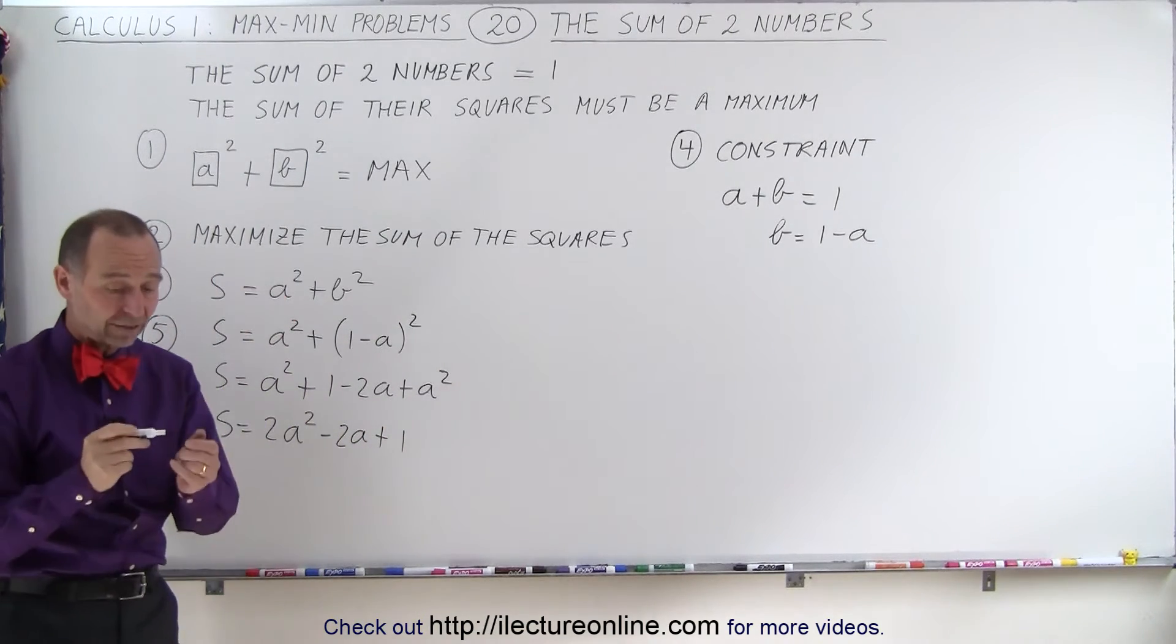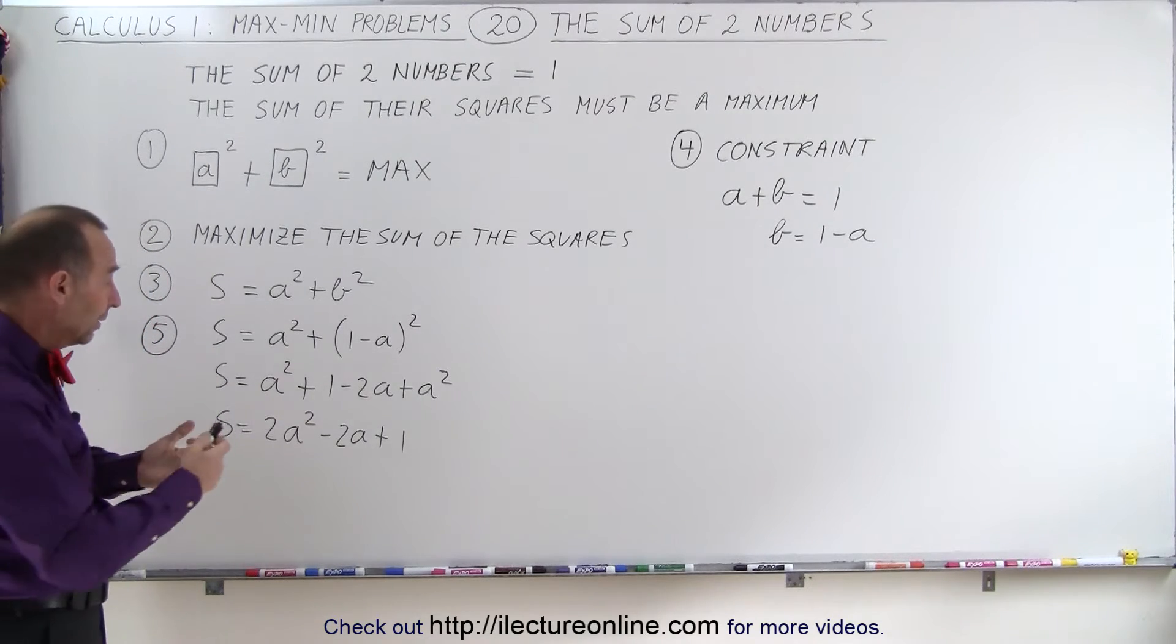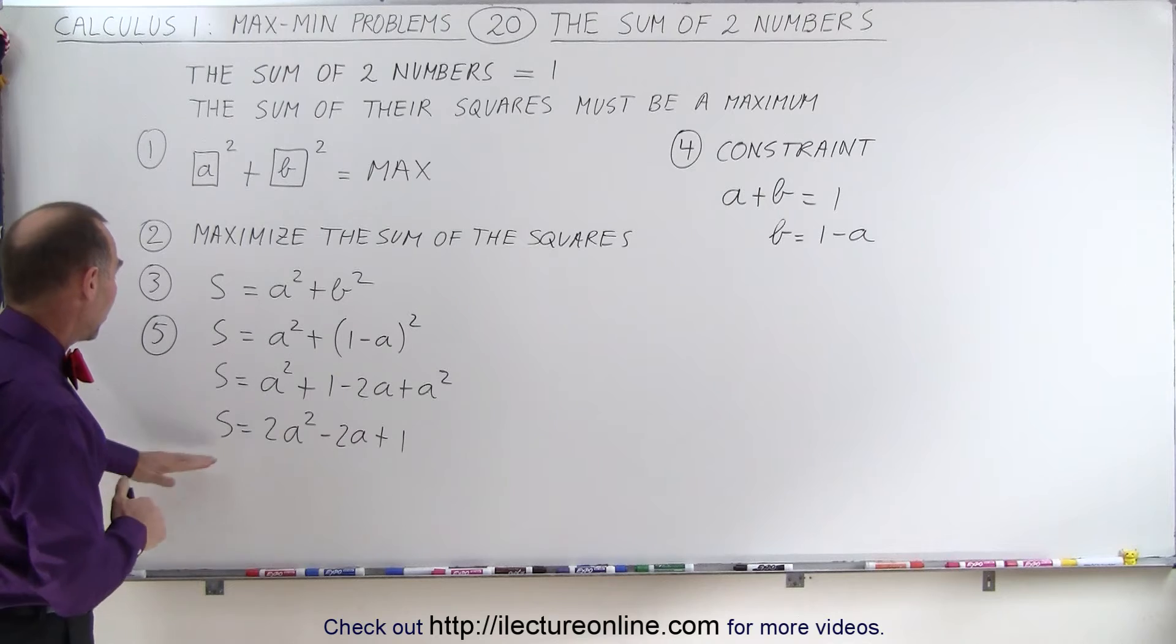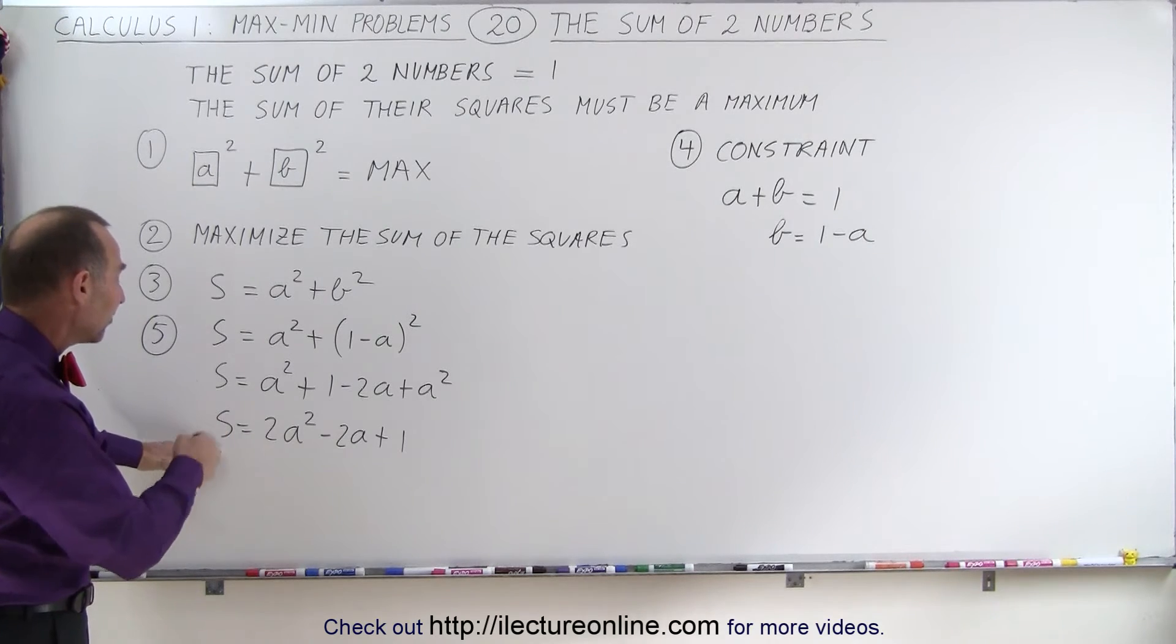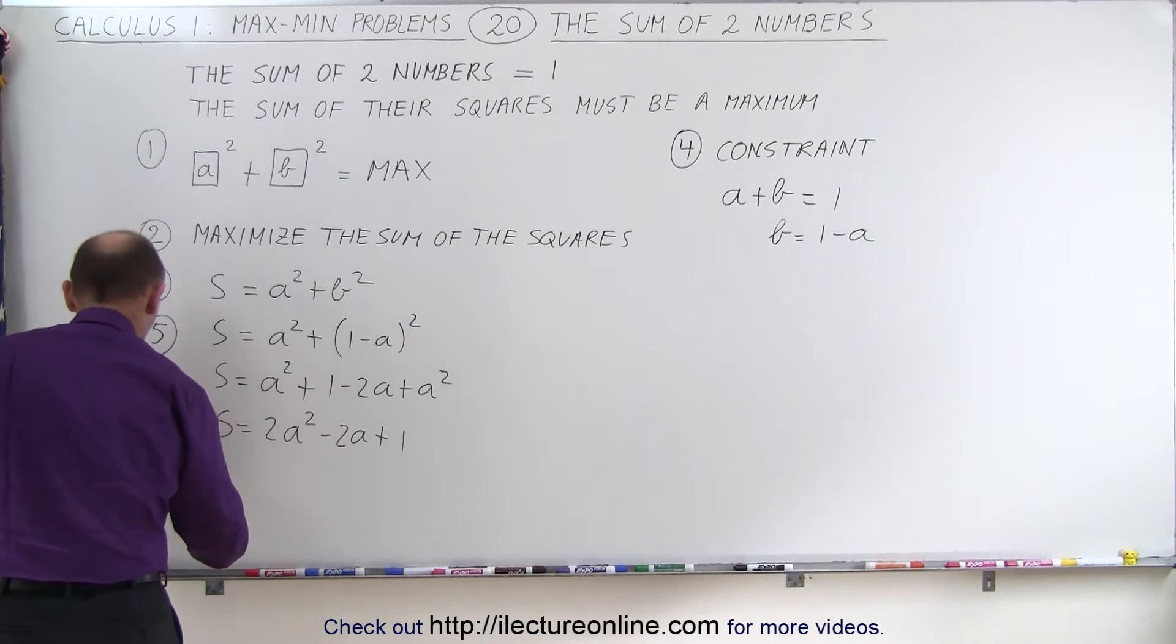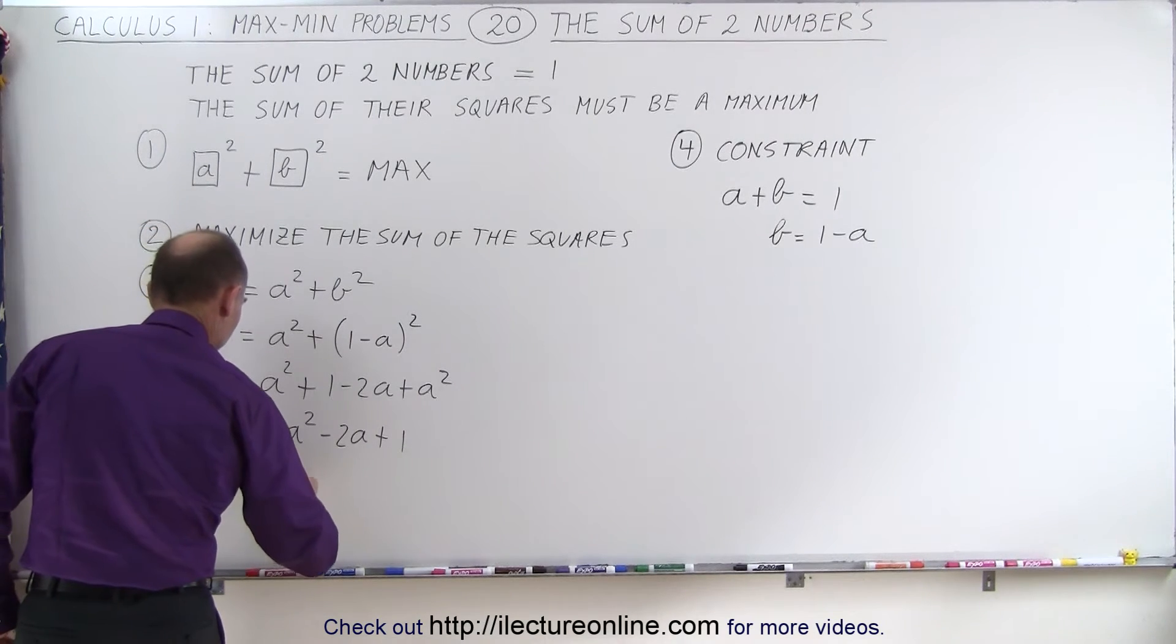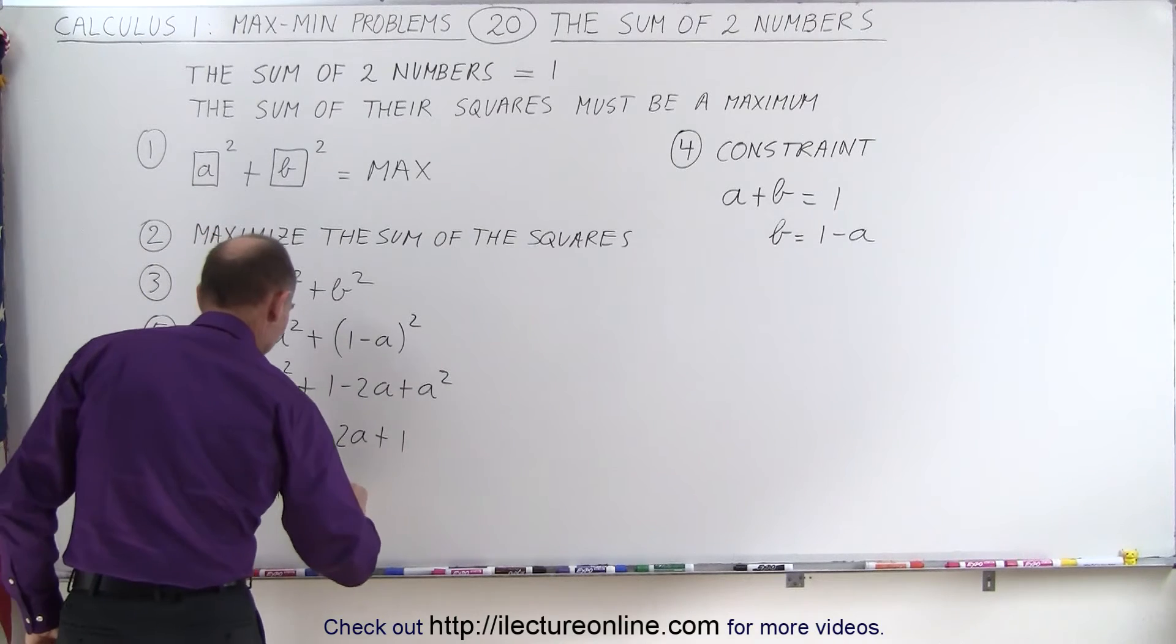And now we're ready for the next step, where we're going to take the derivative of this. After all, we're trying to find the maximum value of the sum of the squares. We're going to take the derivative and set it equal to 0, and solve for A. So that's step number 6. S prime is equal to 4A minus 2.